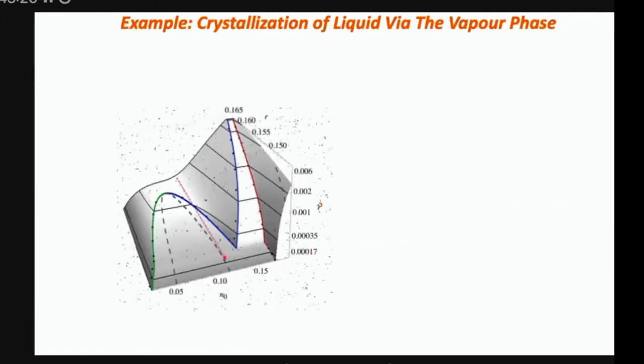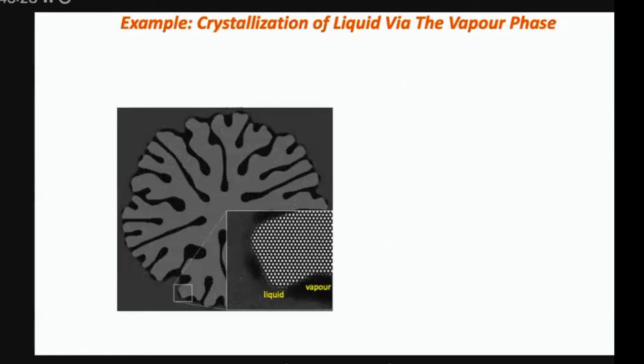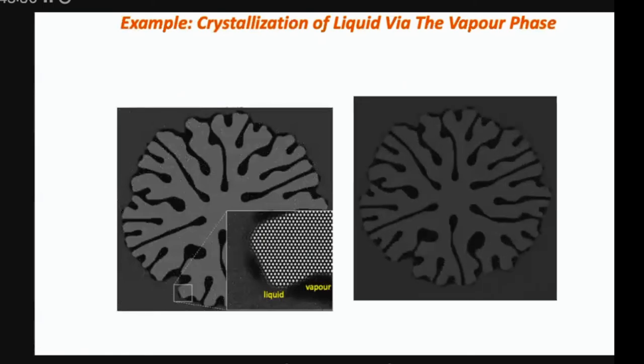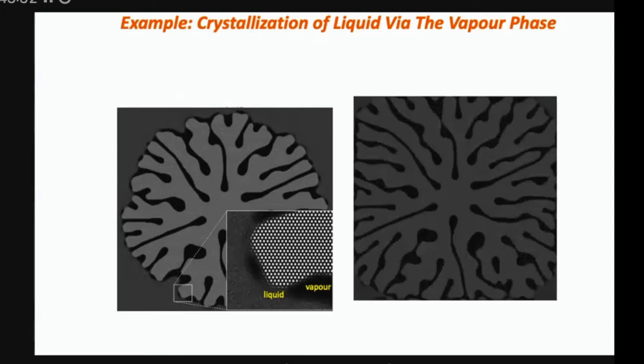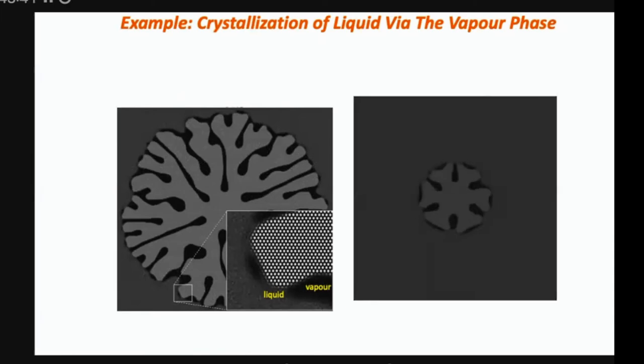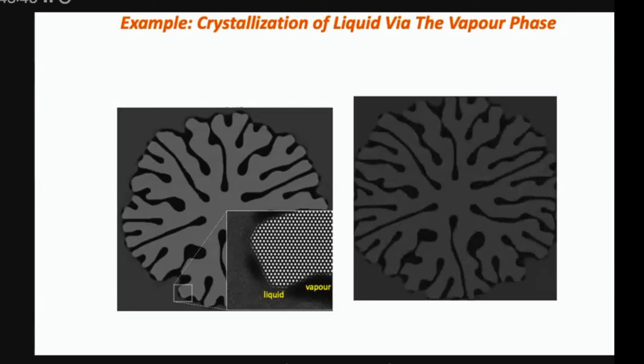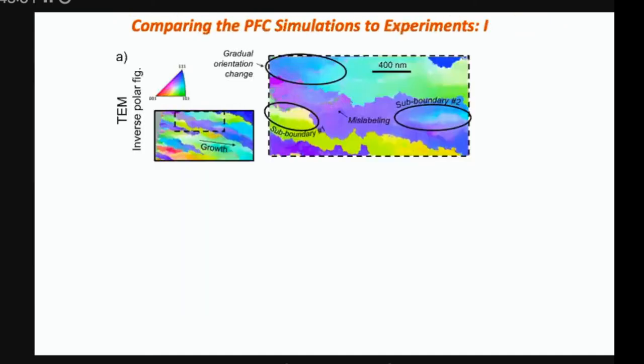And to be able to access scales that are somewhat comparable to the experiments, he coarse grained this model into essentially a phase field model in two variables. The average density, this N bar, and an amplitude, which is like an order parameter for each crystallographic orientation. In this case, we assume triangular phase, so there's three. And he ran model A type dynamics on each amplitude and conserved dynamics on the average density. This now is no longer a microscopic density, it's an average density, like a phase field.